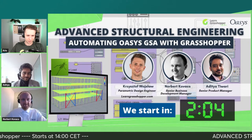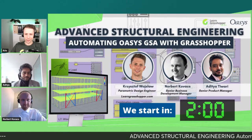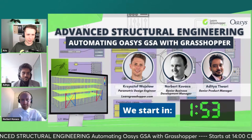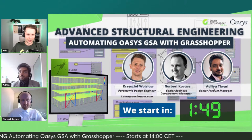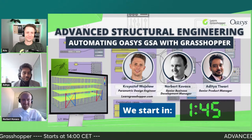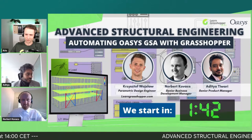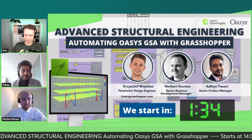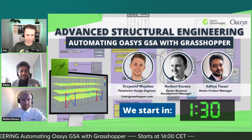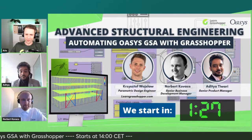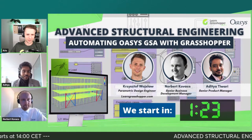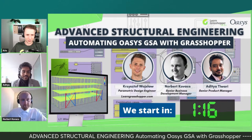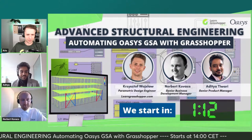Oasis developed a Grasshopper connection to GSA. Adi was involved in product management — planning and strategy rather than active development. The plugin started about five or six years ago as almost a hobby project but eventually gained traction, found a good use case, and became a full-fledged Oasys product.